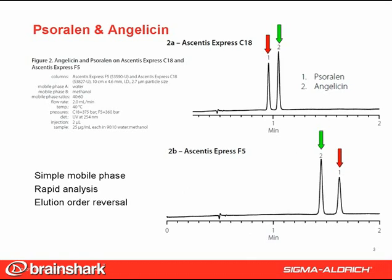This figure shows the major compounds, psoralen and angelicin. Note the simple water-methanol mobile phase, the rapid analysis under two minutes, and the fact that the F5 and C18 gave elution order reversal.